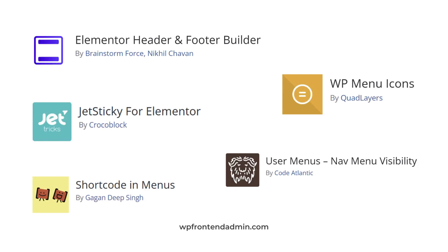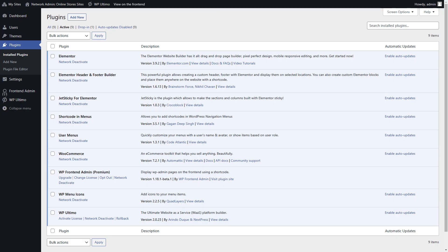Besides these plugins, you need to install Elementor Header and Footer Builder, JetSticky for Elementor, WP Menu Icons, Shortcode in Menus, and User Menus. All these plugins will be really useful as we develop our e-commerce platform with WordPress. Something important is that all these plugins need to be active for the entire network. Remember that you can download all these plugins from the text version of this lesson.